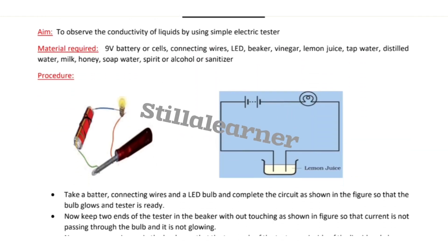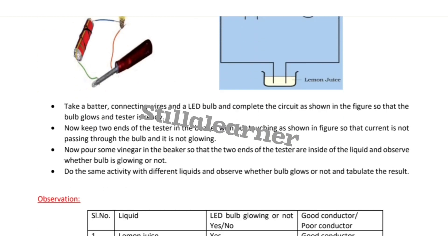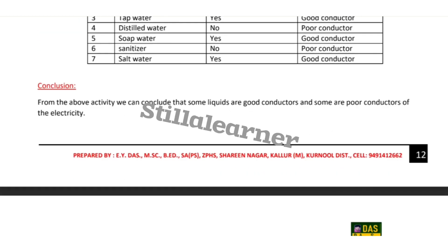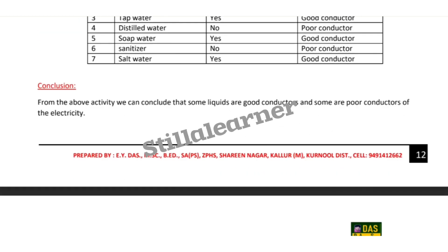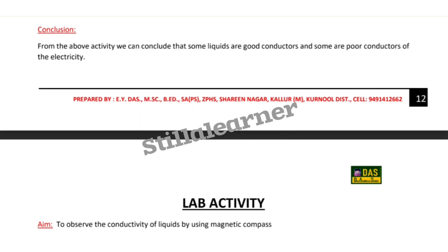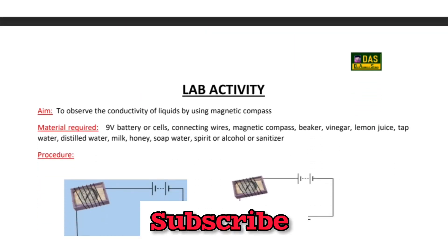Write down the conclusion at the end of each activity. The next activity is to observe the conductivity of liquids by using a simple electric circuit. The following activity is to observe the conductivity of liquids by using a magnetic compass.